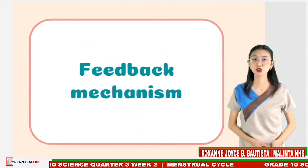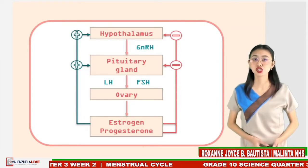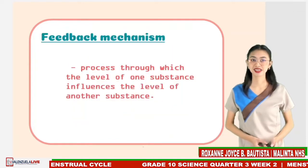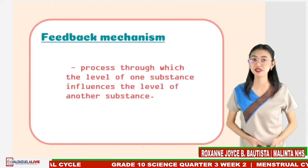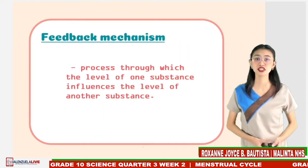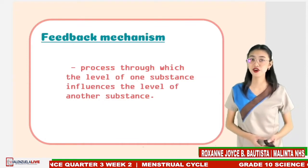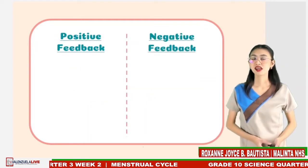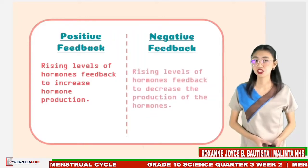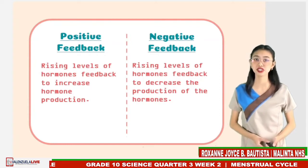The same hormones that control female puberty also control the menstrual cycle. This diagram shows how hormones control the menstrual cycle with negative and positive feedback. When we say feedback mechanism, it is the process through which the level of one substance influences the level of another substance. It could be a positive or a negative feedback. In positive feedback, rising levels of hormones feed back to increase hormone production. Meanwhile, in negative feedback, rising levels of hormones feed back to the hypothalamus and pituitary gland to decrease the production of hormones.